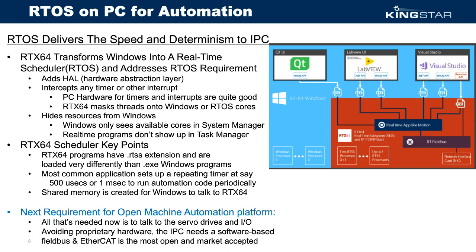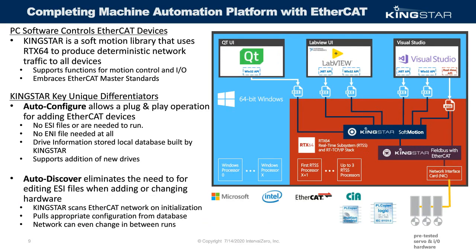Now we need to talk to hardware — that's where EtherCAT comes in. EtherCAT is the field bus that won the field bus wars. It goes out over 100-megabit Ethernet cable with a deterministic packet of the same size, talking to each servo drive in the chain. All you need is one cable from the Intel i210 NIC out to the different servo drives. Kingstar is a soft motion library with all the normal functionality — move this motor, get status, send motion commands, trajectory generation.